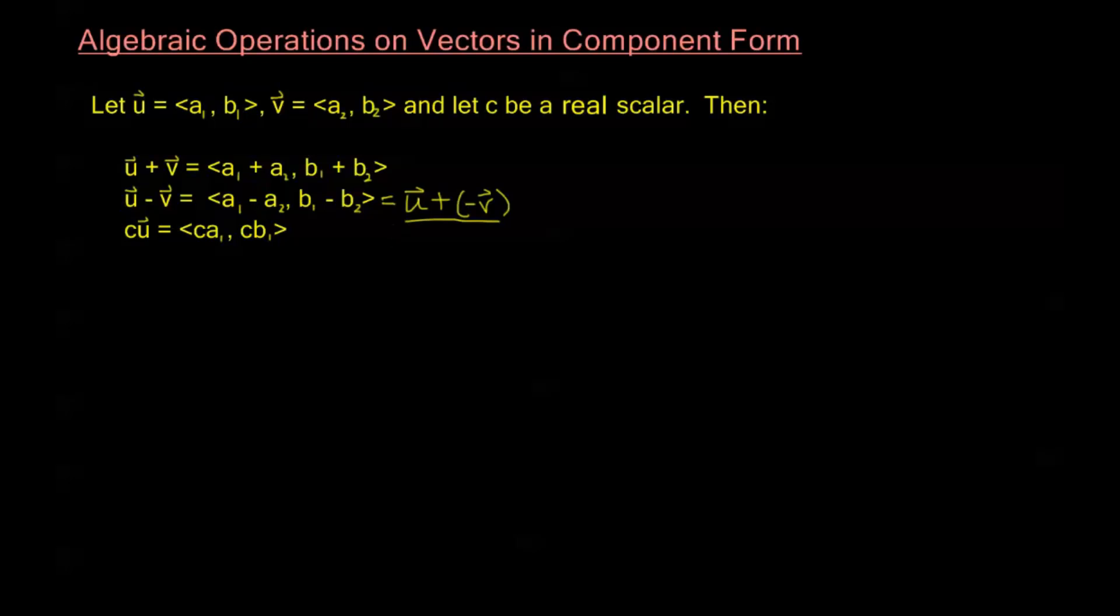So let's go ahead and do an example first before we start looking at the properties of these operations. Let's say we're given a couple vectors. U is the vector <5, 7>. v is the vector <4, -3>, and c is the real scalar 2. And we're asked to find u plus v, u minus v, and cu. So let's go ahead and jump in.